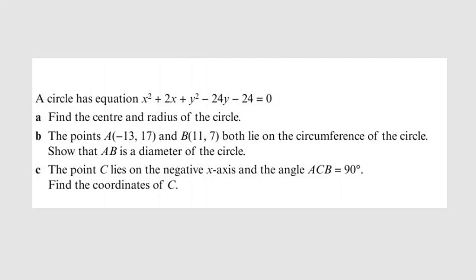Hello, good dear viewers. Still on coordinate geometry, here is our problem for today. The question reads: a circle has an equation x squared plus 2x plus y squared minus 24y minus 24 equal to 0.